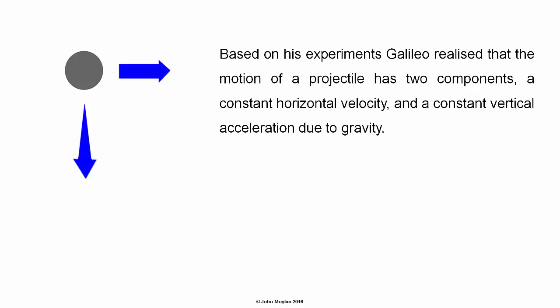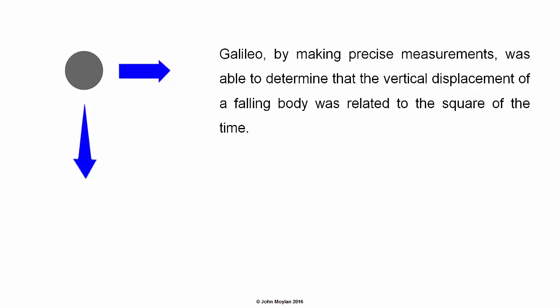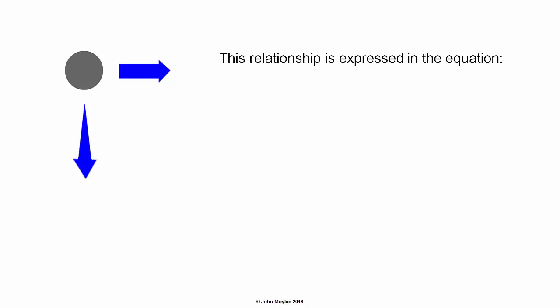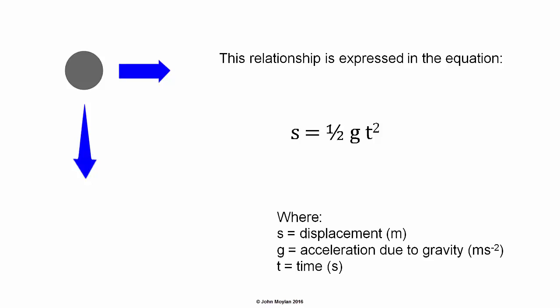These experiments led Galileo to the understanding that projectiles follow a parabolic trajectory. He realized that the motion of a projectile has two components: a constant horizontal velocity and a constant vertical acceleration due to gravity. By making precise measurements, Galileo was able to determine that the vertical displacement of a falling body was related to the square of time. This relationship is expressed in the equation: s = ½gt², where g is acceleration due to gravity in meters per second squared, t is time in seconds, and s is displacement in meters.